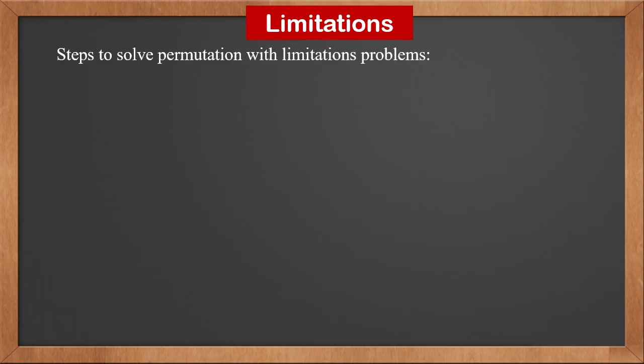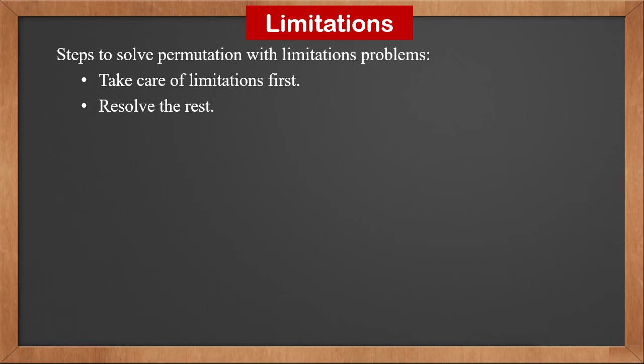Steps to solve permutation with limitations problems are: take care of limitations first, then resolve the rest, and finally use the multiplication rule to combine them together.